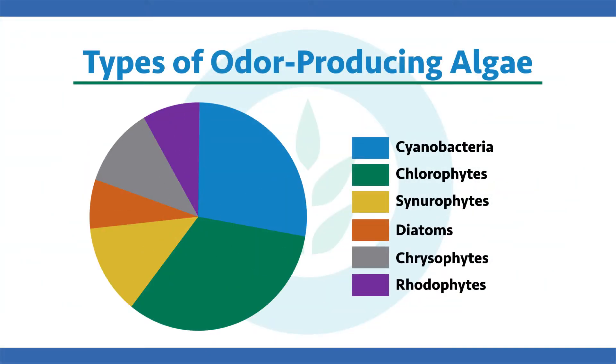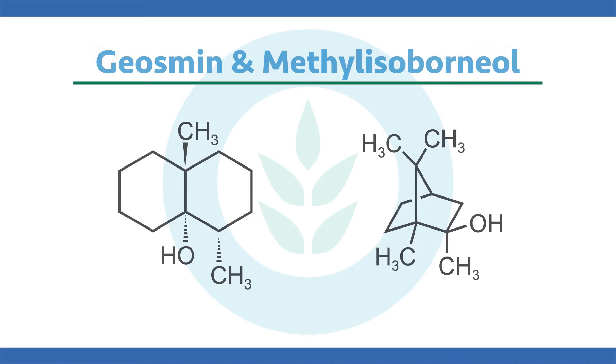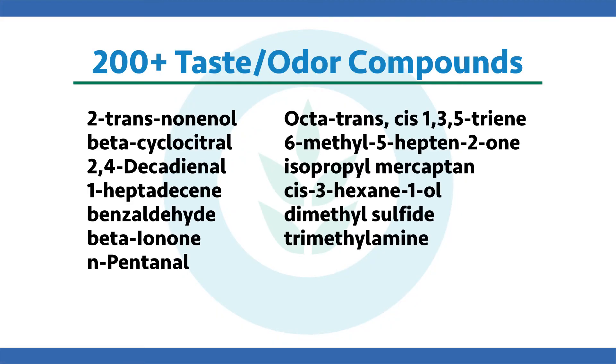Many different types of algae produce taste and odor issues — it's not just cyanobacteria, and it's not just MIB and geosmin. Almost every algal group can produce taste and odor compounds, from the greens to the chrysophytes and the cenourophytes. So if you're only monitoring for cyanobacteria, that doesn't mean you won't have taste and odor issues. With all those algal groups, there are over 200 different types of taste and odor compounds. MIB (methyl isoborneol) and geosmin are very common and widely monitored, but if you're just looking for those two, you may be missing a lot — some compounds can be even more potent.